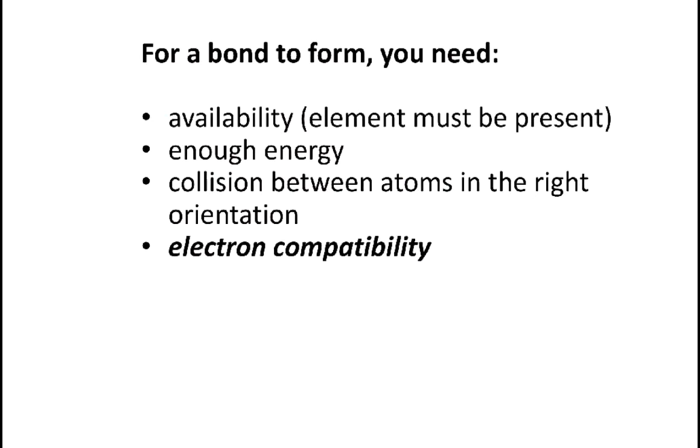For a chemical bond to form, you need a couple of things. You need availability - you have to have the atoms of the elements you want to react present in the same location. You need enough energy. So the atoms are going to have to collide with one another, not just in the right orientation, but you have to have just the right amount of energy.